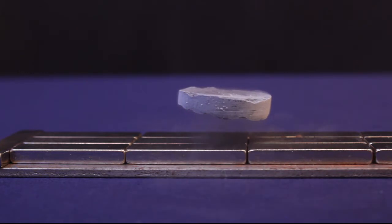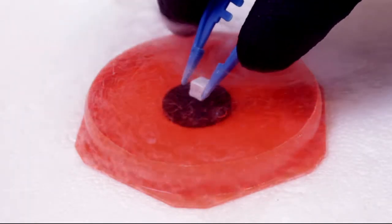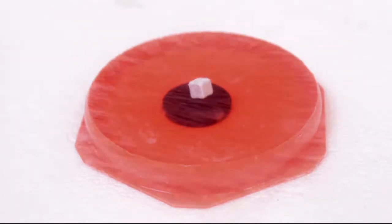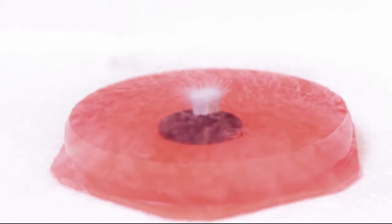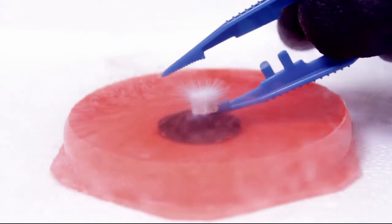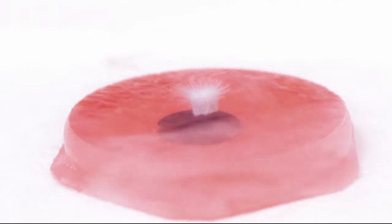So we had a superconductor floating above magnets, but we can also turn it around and have a magnet above a superconductor. Again, we're cooling the superconductor down, this time in a little bath of liquid nitrogen. And if I put this little cube magnet on it, the superconductor will produce a magnetic field that pushes the magnet away. But gravity pulls the magnet down so it stays hovering where it is.